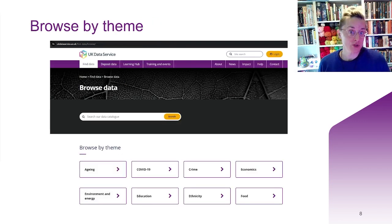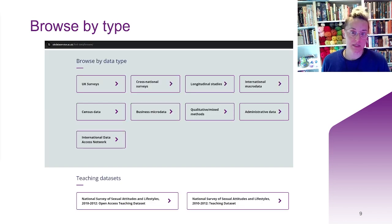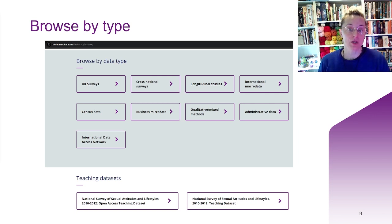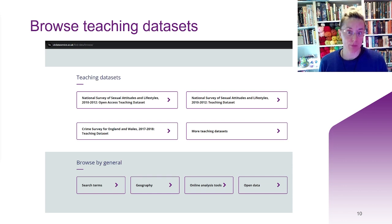You can also use the filters down the left-hand side to further refine your search. You may also want to browse, with theme being the first browsing option presented to you. There are more themes if you scroll down. Past the themes, you can find browsing by data type, and you can keep scrolling to browse by teaching datasets. At the very bottom, there are a few other things grouped together under general that you can browse too.